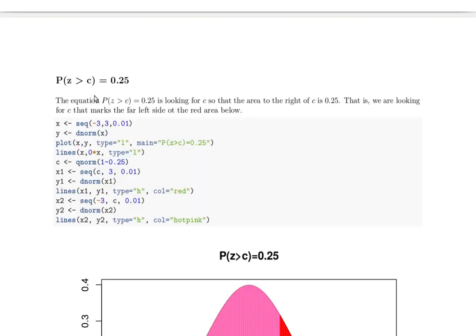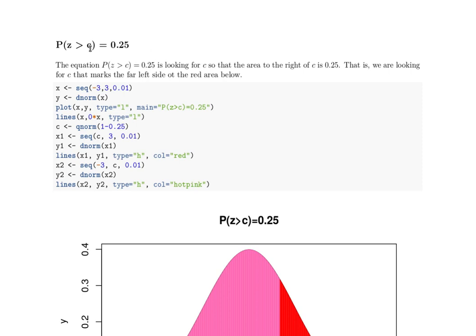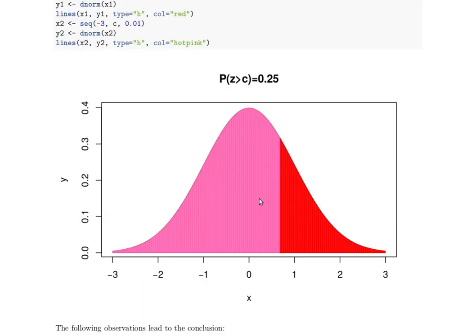Now this problem takes a little bit more thinking about it. We want to find some C so that the probability that Z is bigger than that C is 25%.